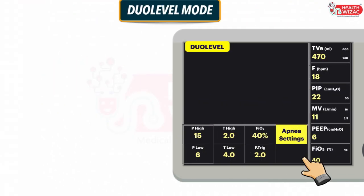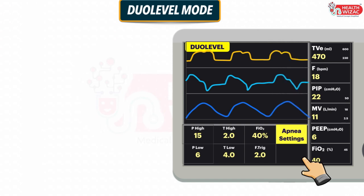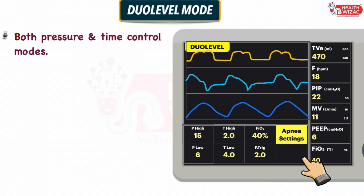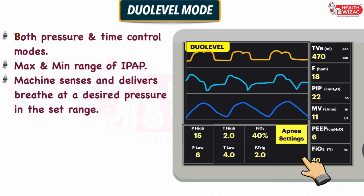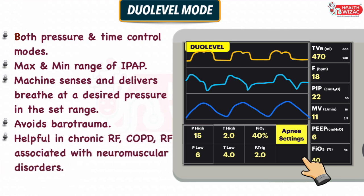Next is DUO level mode, which is also specific to ventilators only. In this mode, we set: P high and P low (Pressure High and Pressure Low), T high and T low (Time High and Time Low), FiO2 settings, Flow Trigger, and Apnea settings for backup ventilation. Compared to AVAPS mode, this mode also has the advantage of pressure control, but instead of volume, it has time control. We set a maximum and minimum range of IPAP rather than a fixed IPAP; the machine senses and delivers breath at the desired pressure in the set range, helping to avoid barotrauma. This mode is also useful for chronic respiratory failure, COPD, and respiratory failure patients associated with neuromuscular disorders.